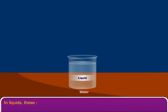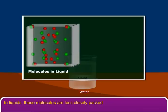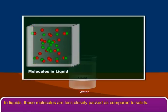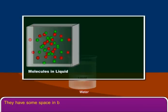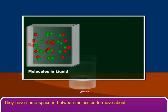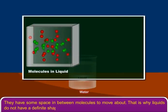In liquids, these molecules are less closely packed as compared to solids. They have some space in between molecules to move about. That is why liquids do not have a definite shape.